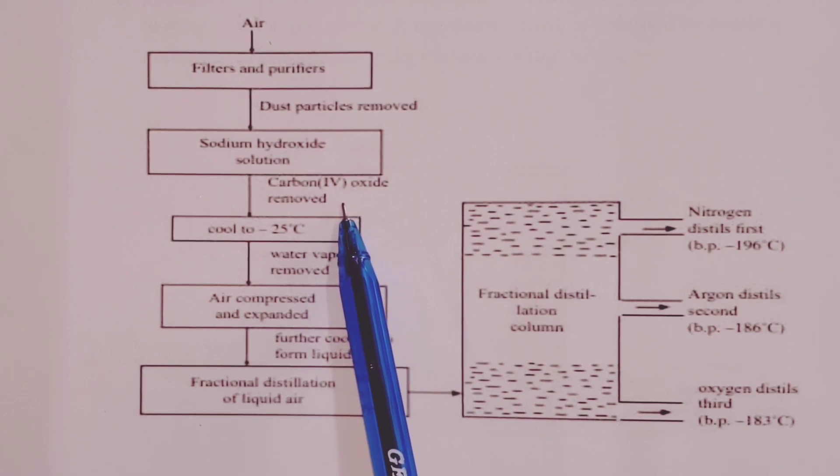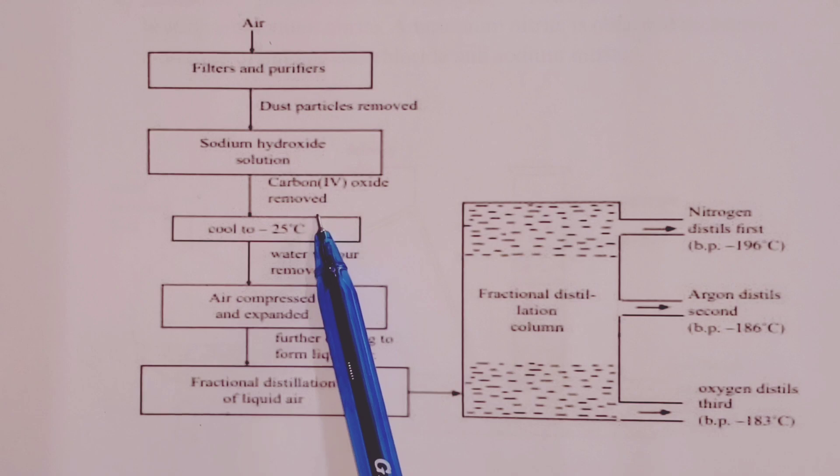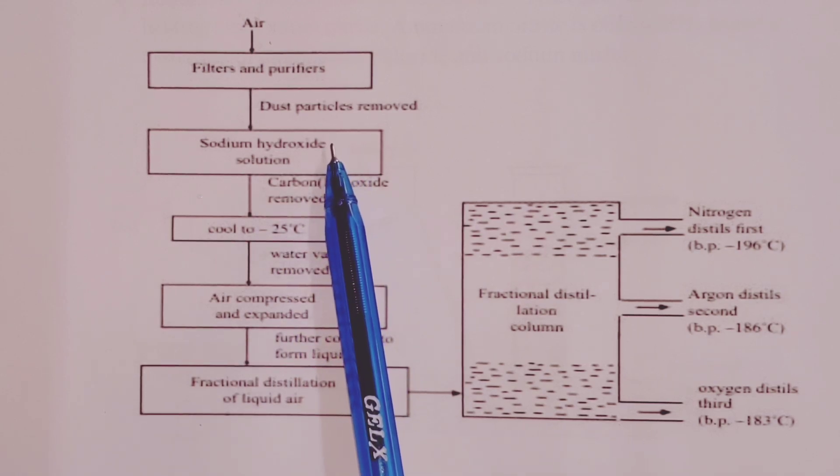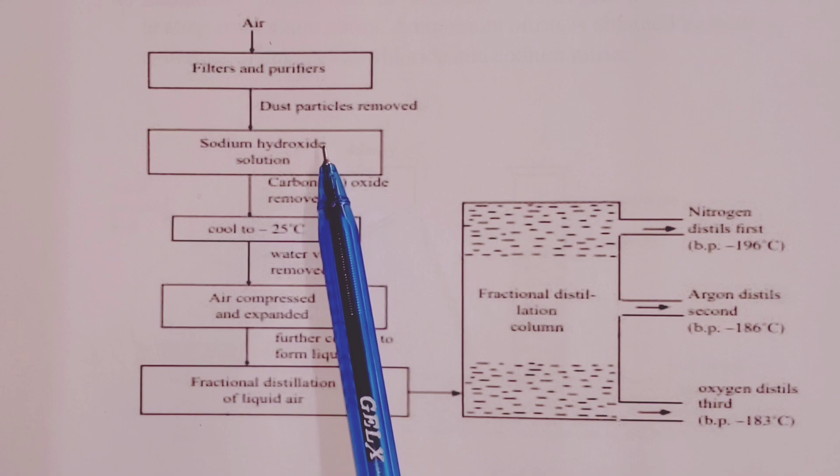Now, in our distilling plant, we are using very tiny pipes. These pipes would be blocked if these two substances are not removed early enough before the air is turned into liquid. Of course, dust particles would also block these pipes because they are also solid.